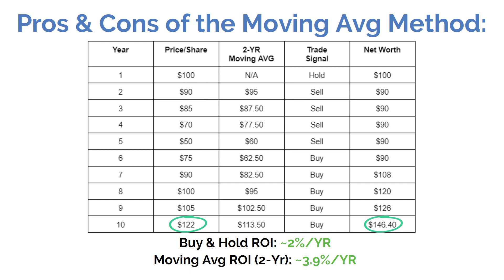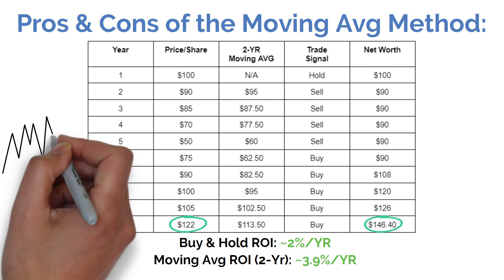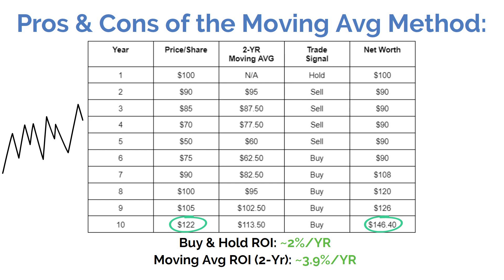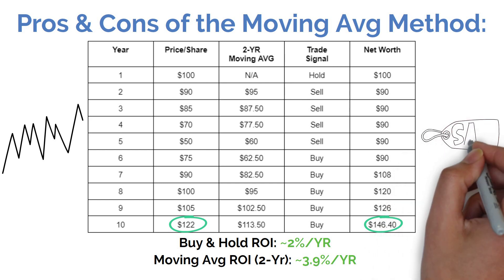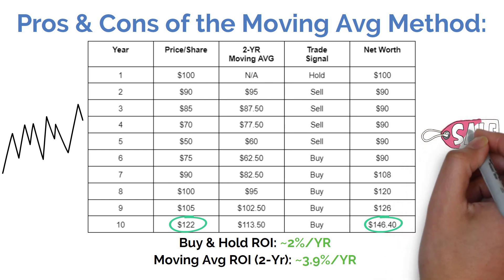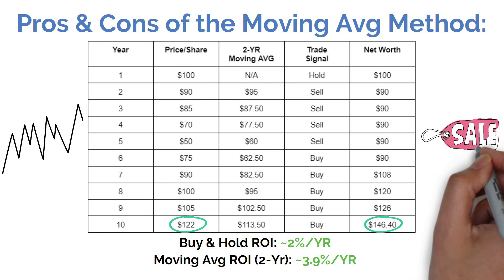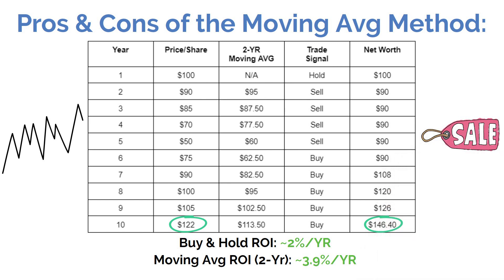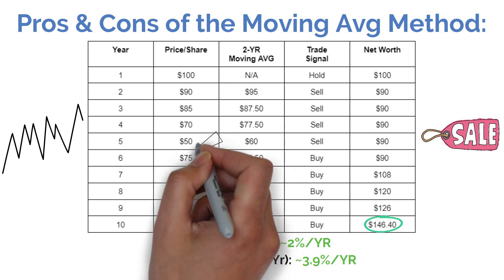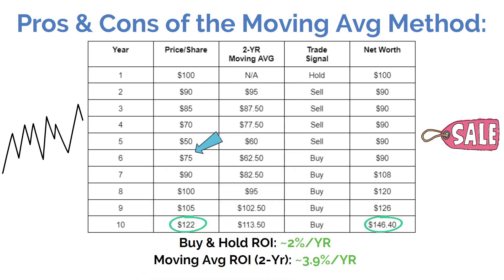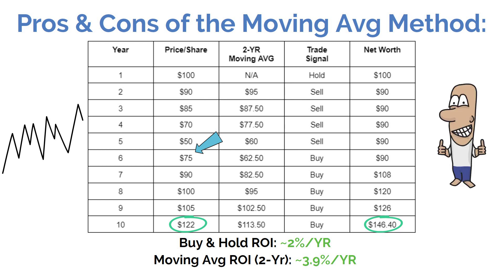Where moving average approaches can struggle is when the markets experience a lot of volatility and don't produce a consistent trend in one direction or another. Choppier markets can create a lot of buy and sell signals in a relatively short period of time, which can lead to higher trading costs and possible undesirable tax consequences, in addition to possibly missing out on sudden and big market reversals. For example, between years 5 and 6 in that hypothetical, the markets experienced a sudden reversal after bottoming out and rose by a whopping 50%, but because the moving average hadn't had enough time to adjust, our technical investor missed out on that year's gains.